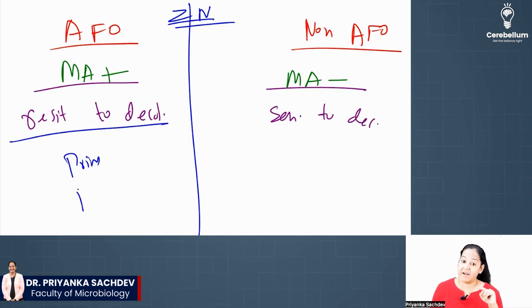Since they are resistant, they take the primary stain and they are red in color. Since they are sensitive, the primary stain is gone and they take the secondary stain, they are blue in color. Any confusion? Okay, can we go? Otherwise give me a thumbs up, you got it.